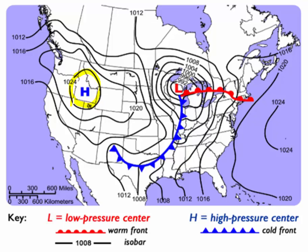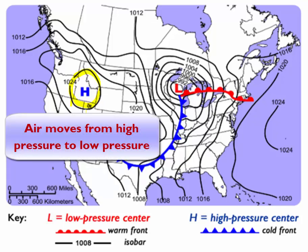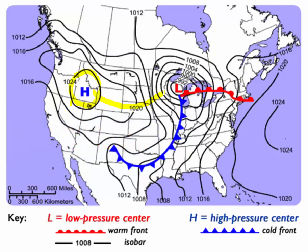Air moves from high air pressure to low air pressure. So what we're going to see is air moving out of this high pressure system towards this low pressure system. The air is going to move from 1024 down to 1020, to 1016, to 1012.